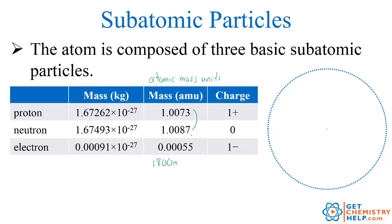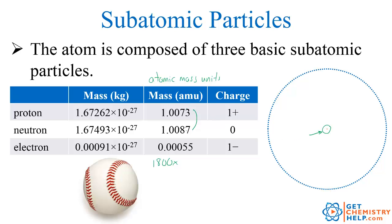These massive particles — the protons and neutrons — live right here in the nucleus. So even though most of the mass is contained in the protons and neutrons, it's not spread out evenly around the atom — it's right here in this nucleus. One way to think about it: if the protons and neutrons had a mass around that of a baseball, the mass of the electron would only be around a grain of rice.